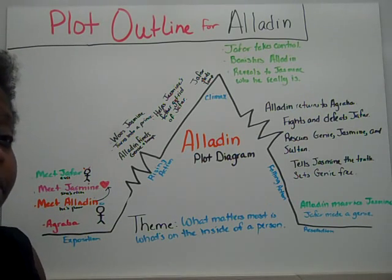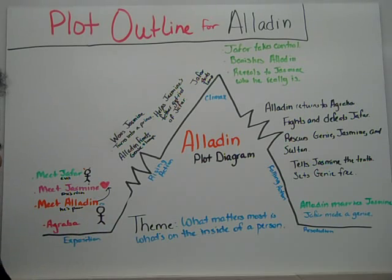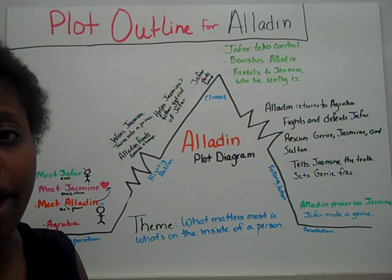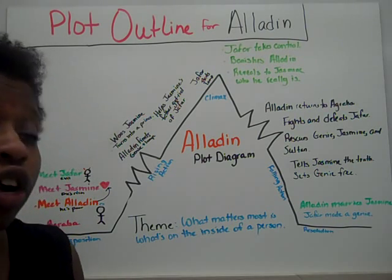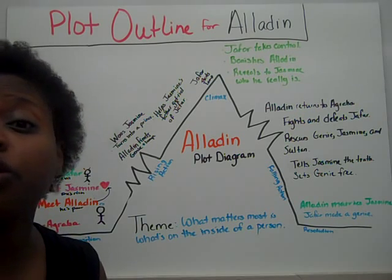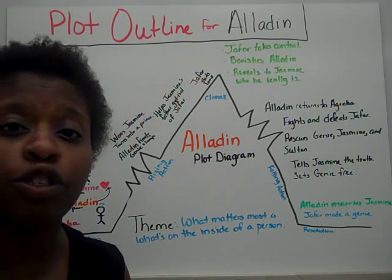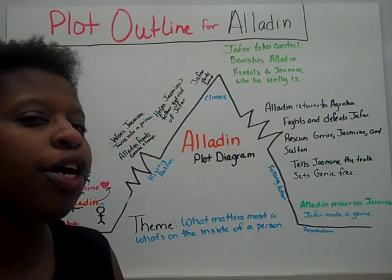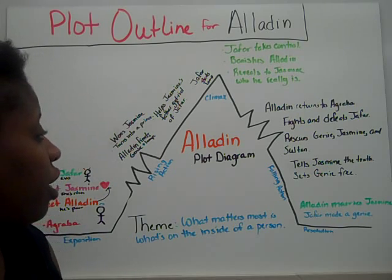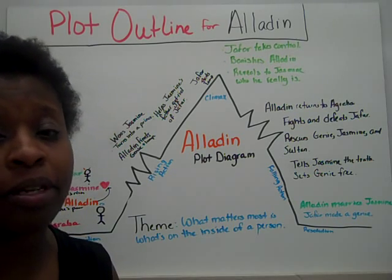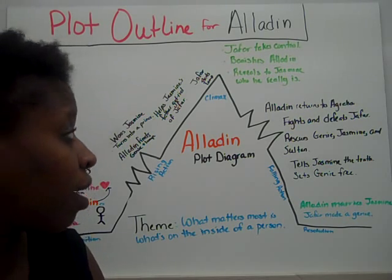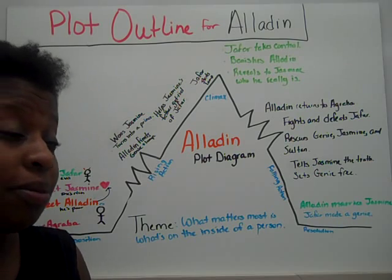In the exposition, we know the setting of the story is in Agrabah. At the beginning of the story, we meet Aladdin — he's a poor street rat and he's our good guy. Next, we meet Jasmine. She's rich, she's the sultan's daughter, and the sultan is forcing her to marry someone that she does not love. Then we meet our antagonist, Jafar. Jafar is the sultan's right-hand man, but Jafar has an ulterior motive — he wants the sultan's crown. That is the exposition.